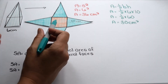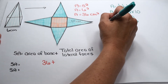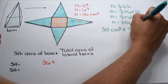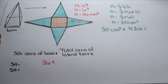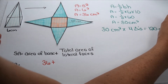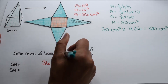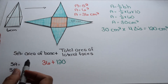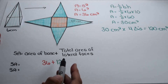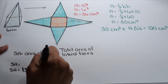Since our base is a regular polygon, each triangle is going to be congruent to each other. So we don't need to find the area of each triangle individually — we can simply take the area of one triangle and multiply it by the fact that there are four congruent triangular lateral faces, giving us 120 square centimeters for the total lateral area. Adding 36 plus 120 gives us a total surface area of 156 square centimeters.